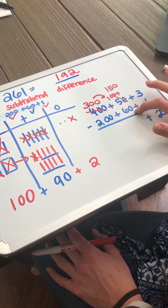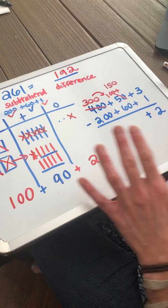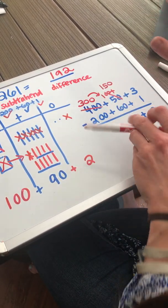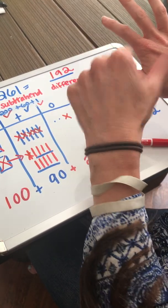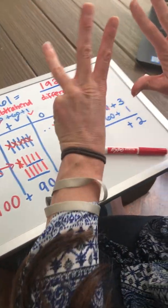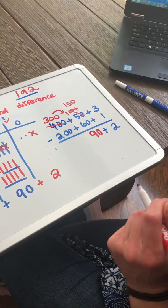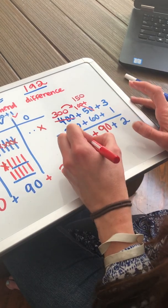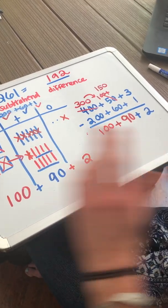And so now I need to take away 60. So I could go backwards or I could count up. I'm going to count up 60 to 150 and see how many tens that is. So if I'm at 60, 70, 80, 90, 100, 110, 120, 130, 140, 150. I had to use nine tens. So that tells me that 150 minus 60 is 90. 300 minus 200 is 100. So the difference is 192.